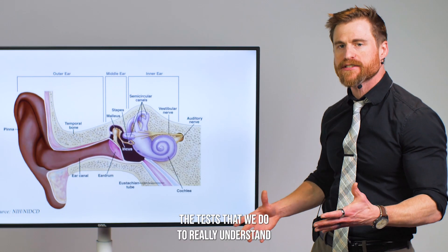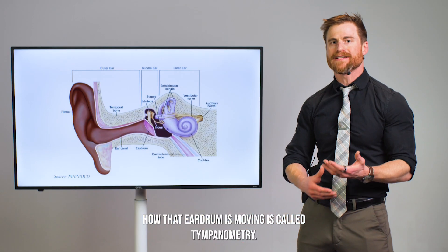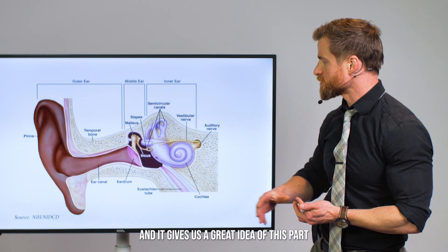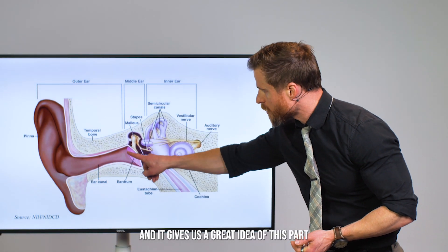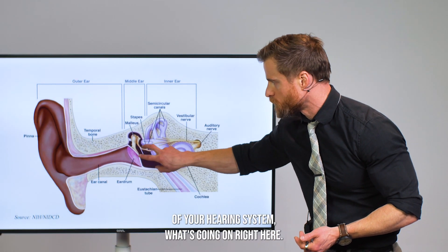The test that we do to really understand how that eardrum is moving is called tympanometry, and it gives us a great idea of this part of your hearing system. What's going on right here?